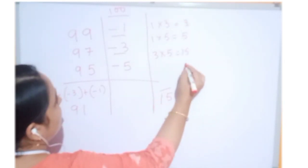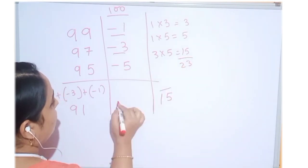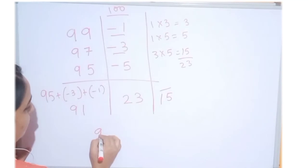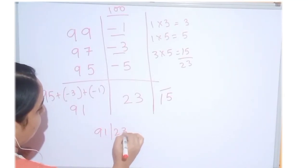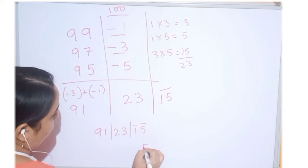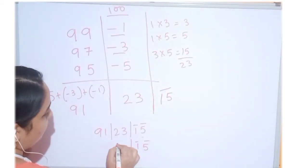55. 3 ones are 3. Addition of all these things will get 23. Simplify this number. So, 5 bar. 1 bar. 23. 91.